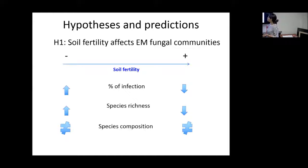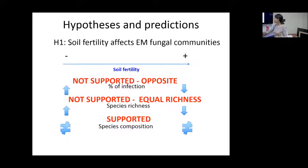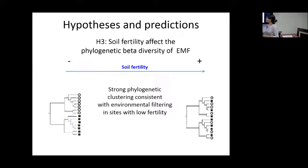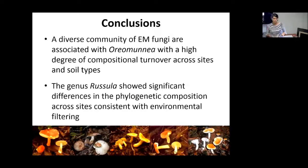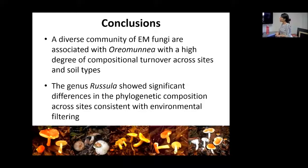What can we conclude? The percentage of infection hypothesis was not supported — we found the opposite trend, with highest infection in high-fertility sites. Species richness was not supported either — we found equal richness in high-fertility sites. We did support our hypothesis about different community compositions at different soil types, and we supported our hypothesis about environmental filtering in the community. The conclusion is that Oremunia is associated with a very diverse ectomycorrhizal fungal community, with high turnover among soil types. Russula was the most abundant genus and showed significant differences in phylogenetic composition across soil types.